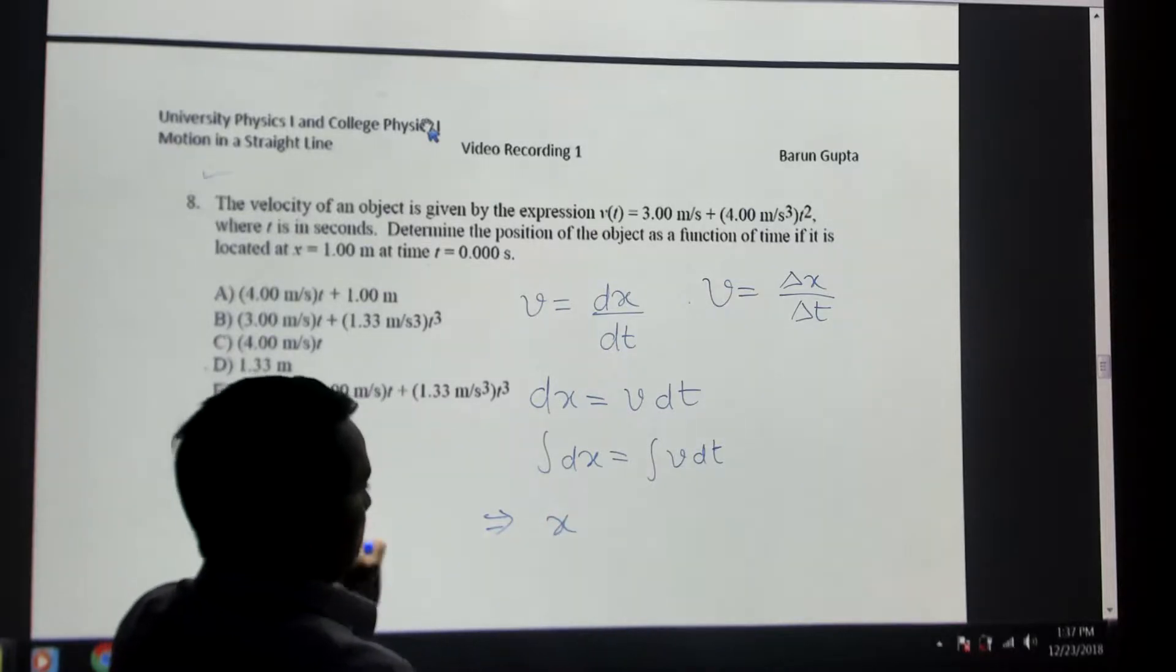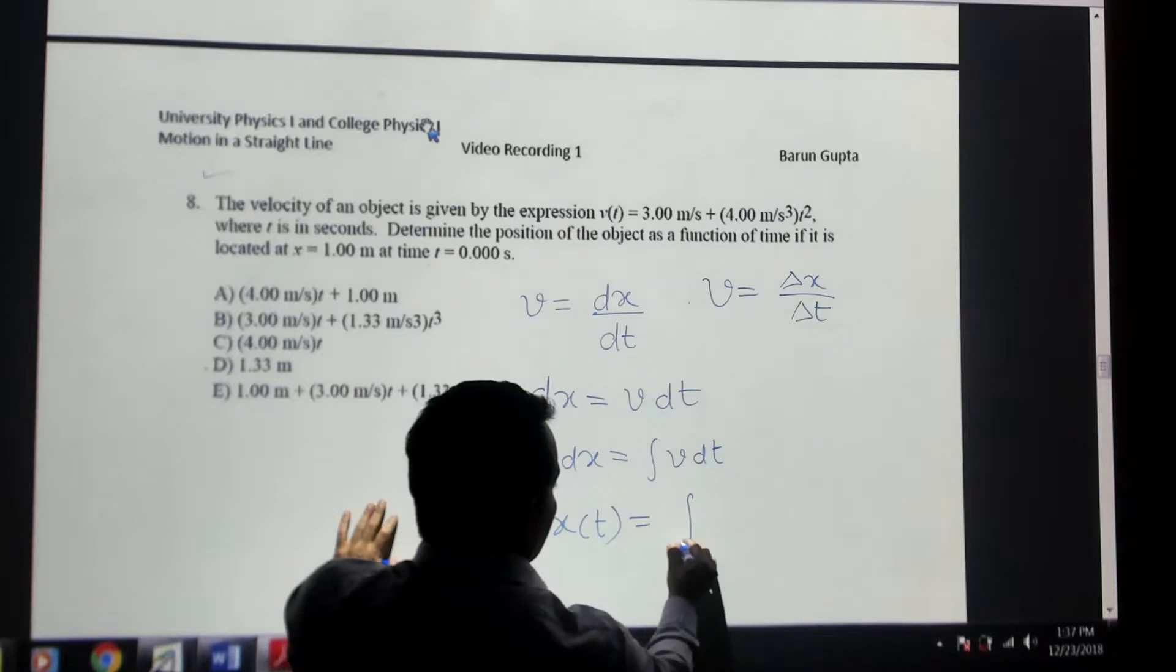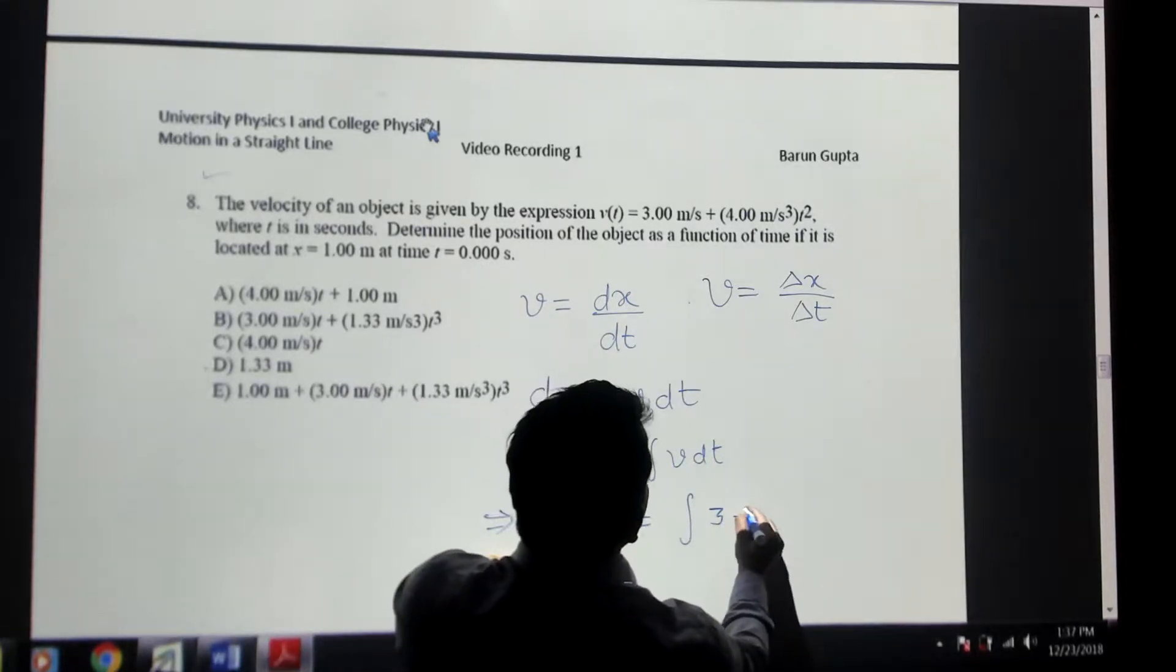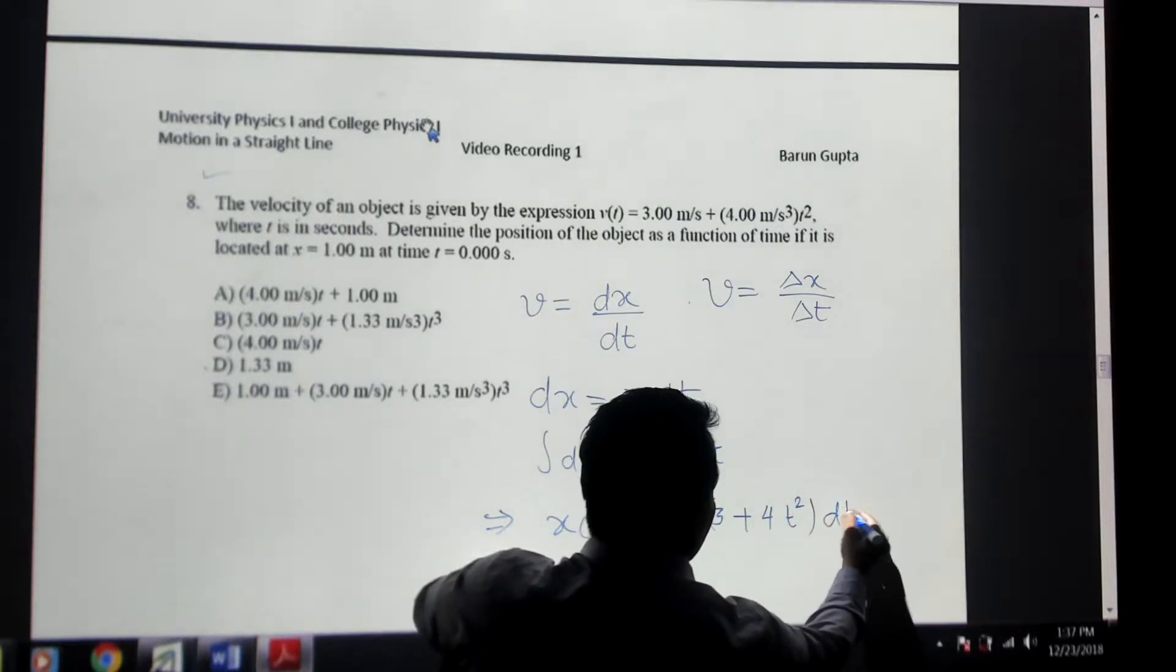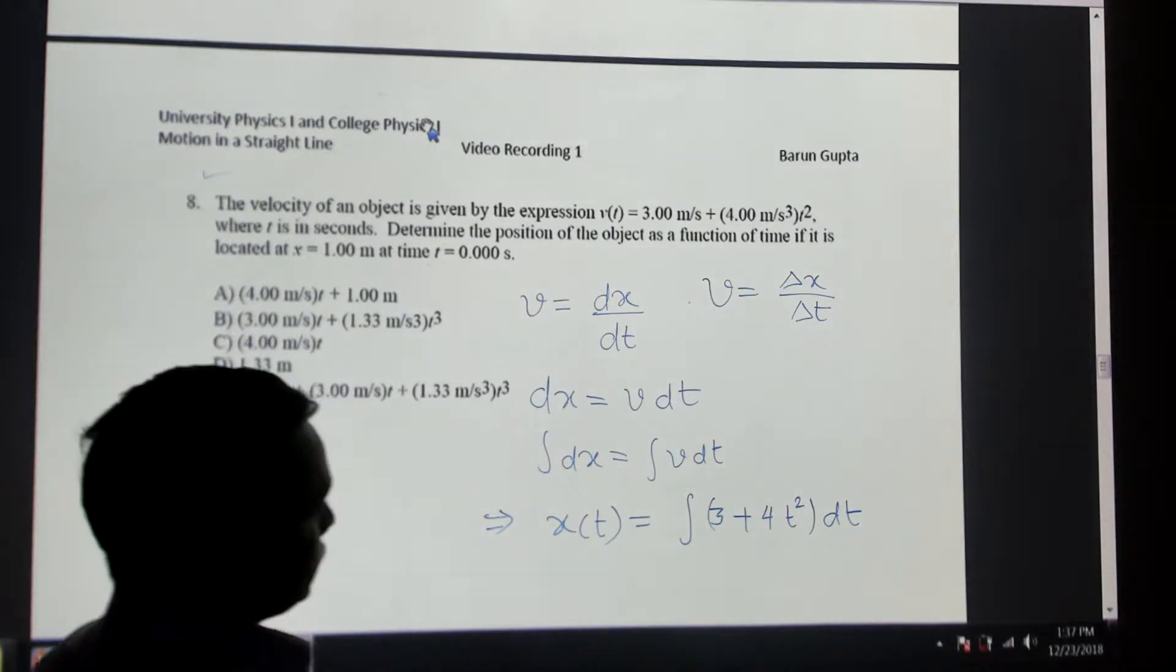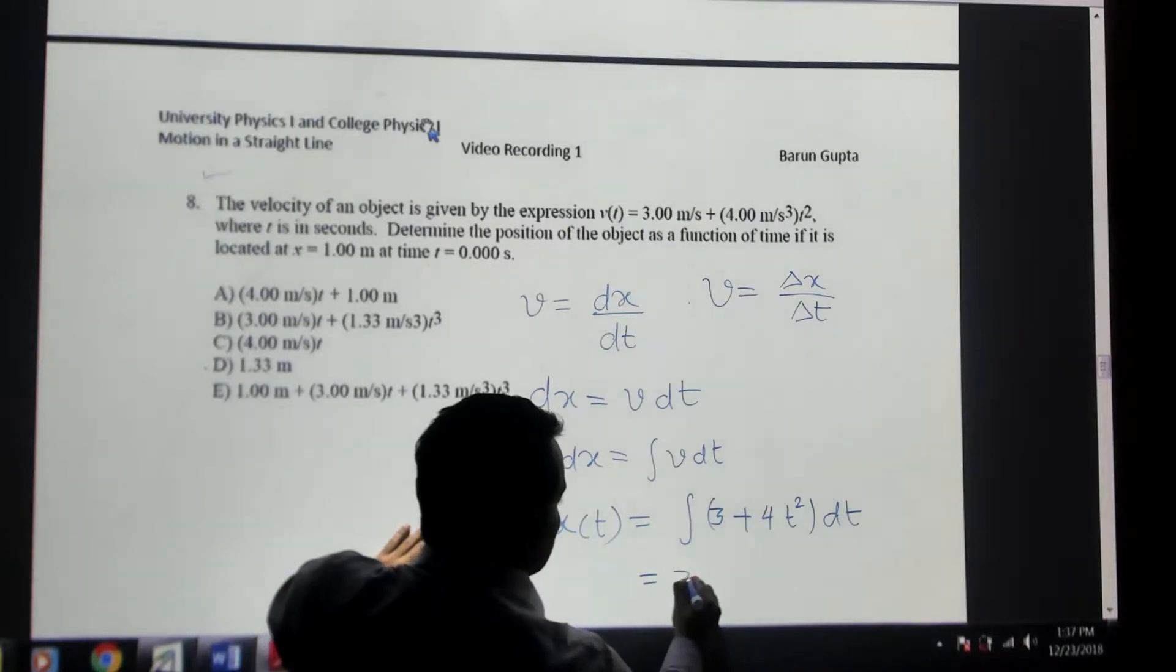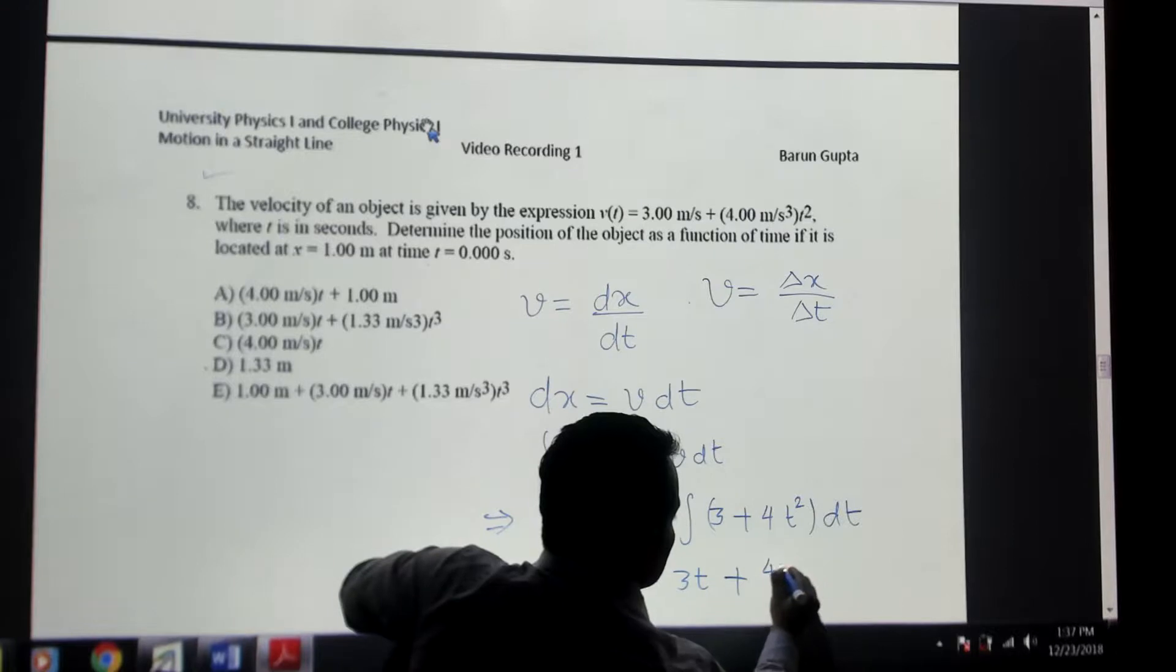Once when you integrate this, this is the total position as a function of time. The velocity is 3 plus 4t squared, and this is dt. So you just have to integrate this one. This would be 3 times t plus 4t cubed over 3, and then you have a constant here.